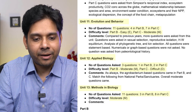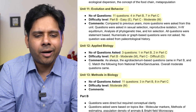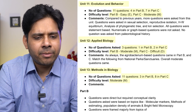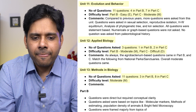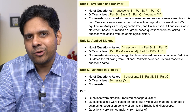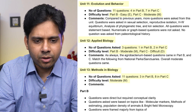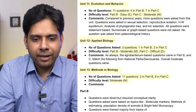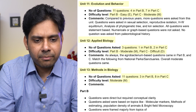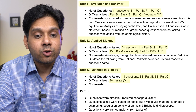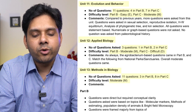Unit 12, Applied Biology, had only three questions — one in Part B and two in Part C. Given the very few questions, it is easily skippable. Part B was moderate and Part C was difficult.